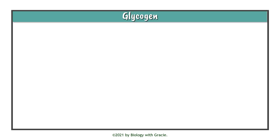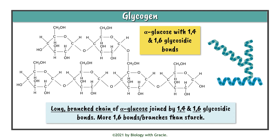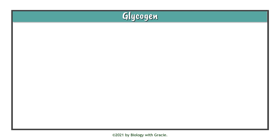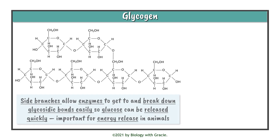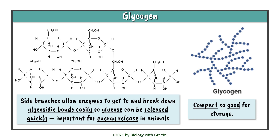Finally, let's talk about glycogen. Glycogen is made up of alpha glucoses with 1,4 and 1,6 glycosidic bonds. It is a long branched chain of alpha glucose and actually has more 1,6 bonds — and therefore more branches — than starch. Similarly to starch, its side branches allow enzymes to access and break down the glycosidic bonds quickly so glucose can be released rapidly, which is important for energy release in animals. It is also compact, making it a good polysaccharide for storage.